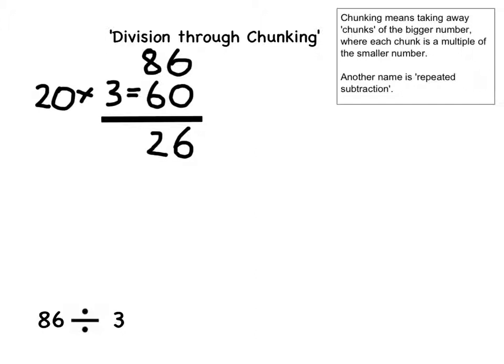I've now got to find another multiple of 3 that I can use as a chunk to subtract from 26. Using my times table knowledge, I know that 8 multiplied by 3 equals 24. This number is very close to 26, so I'm going to use that as my next chunk.